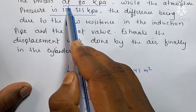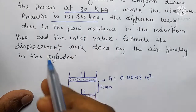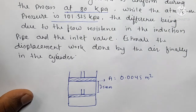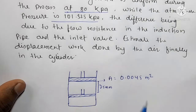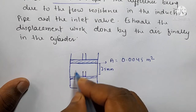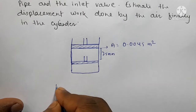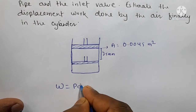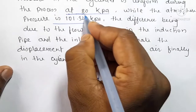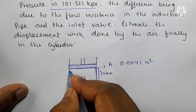During the process, the pressure is uniform at 80 kilopascal. Now for displacement work, work equals P into dV — pressure in the cylinder is 80 kPa. The volume here is the volume displaced by the piston.